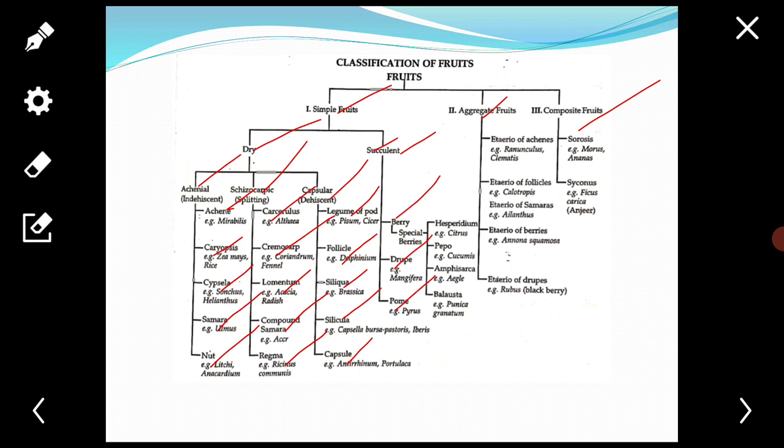Berry: these are simple succulent fruits derived from mono to polycarpillary syncarpous pistil with superior or inferior ovary. They may be single seeded, example date or grape, or many seeded. Seeds become free from placenta and come to lie in pulp.